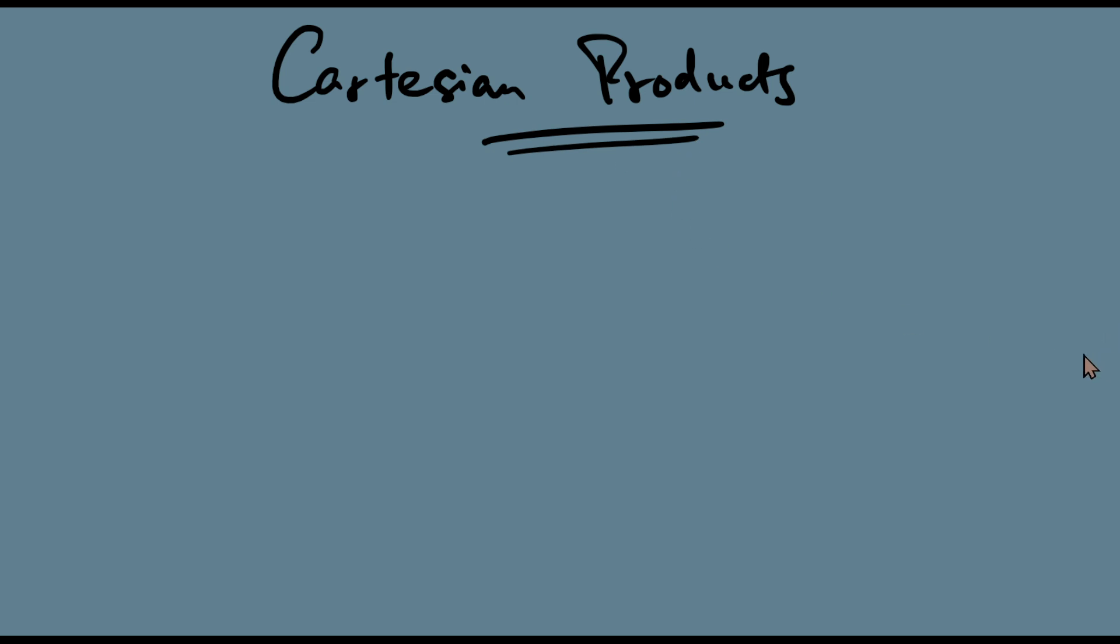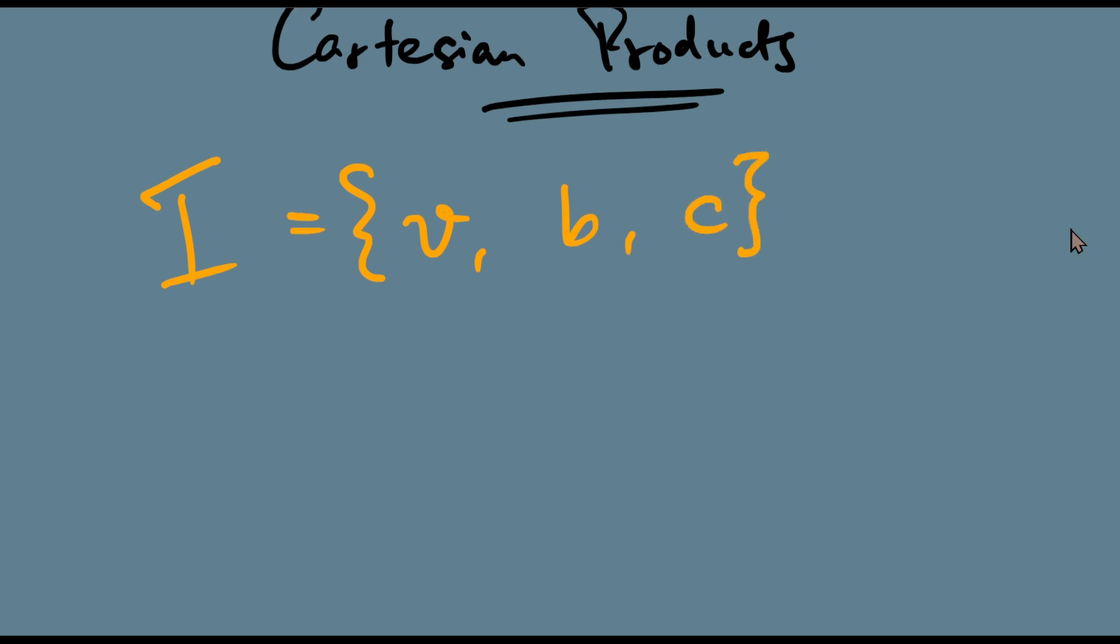We discussed Cartesian products very briefly in our operations on sets videos at Maths Recoded, but we review it here again. Say I have a set I for ice creams with three ice creams: Vanilla, Butterscotch and Chocolate, using their initials.